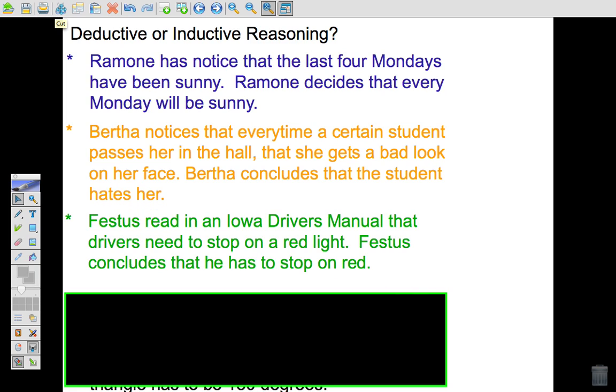Festus read in an Iowa driver's manual that drivers need to stop on a red light. Festus concludes that he has to stop on a red light. Now with him deciding that he needs to stop on a red light, is this based on fact? Is it based on a rule or is it based on something he's observed where he sees other people stopping at a red light? And he read it in the Iowa's driver's manual. So it's based on fact, it's based on a rule. So this would be deductive reasoning.